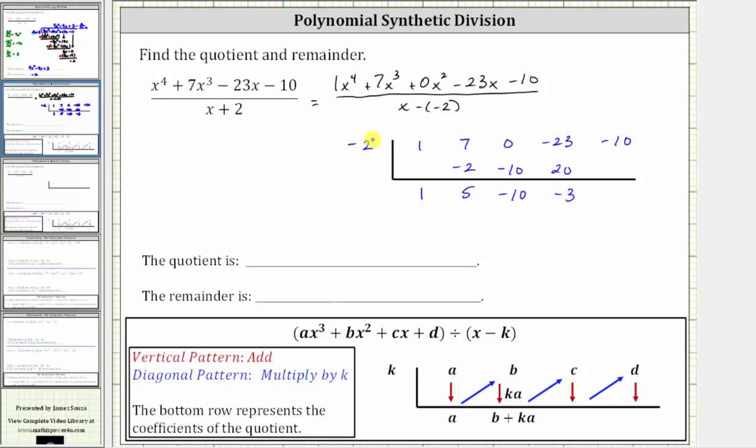Multiply by k, negative three times negative two is positive six. Place positive six in the next column, and add.